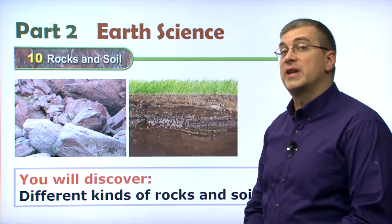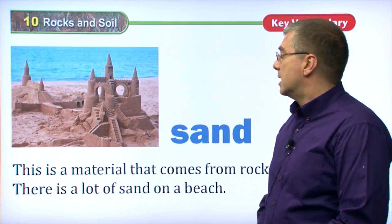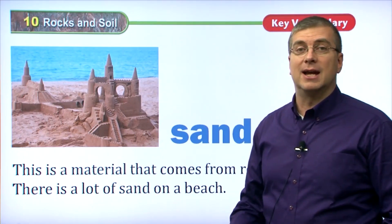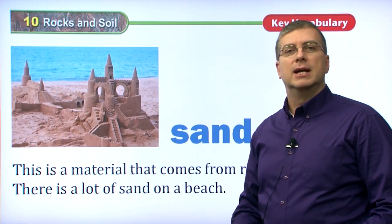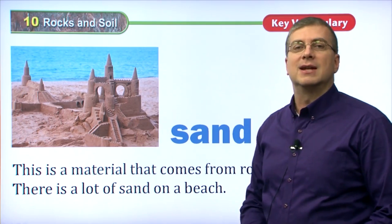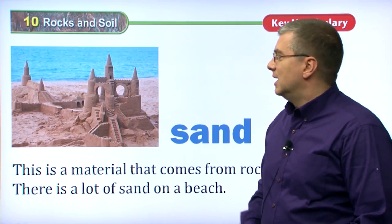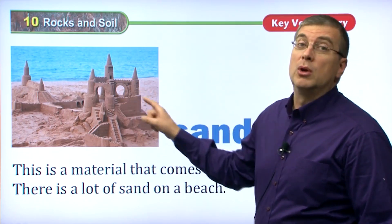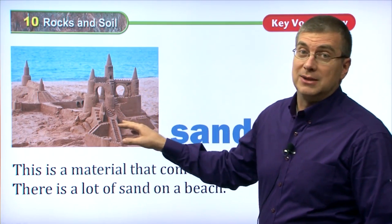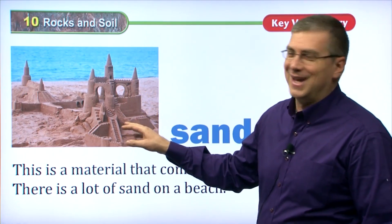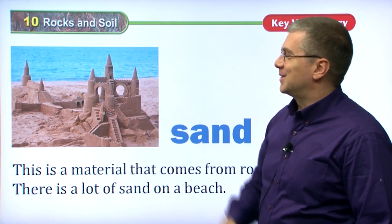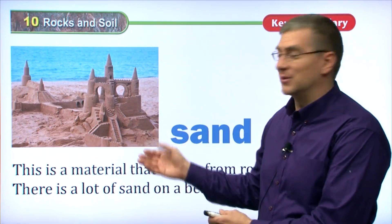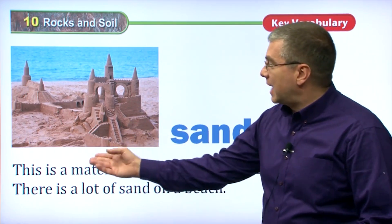Let's take a look at the first type. The first type, of course, is sand. Where do you find sand? You find sand at the beach. Now, be careful — sand doesn't normally look like this. It looks like some kids came by and they made some sand castles. So, sand.